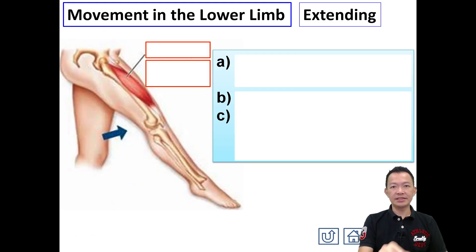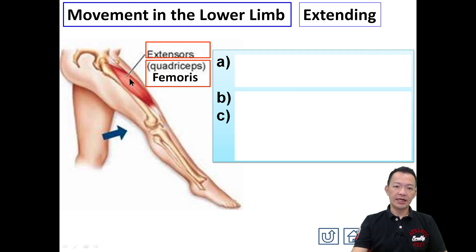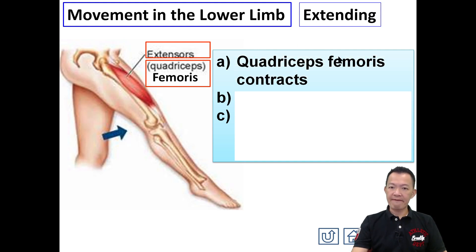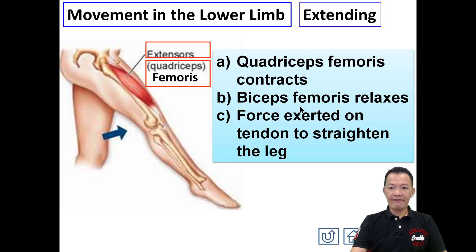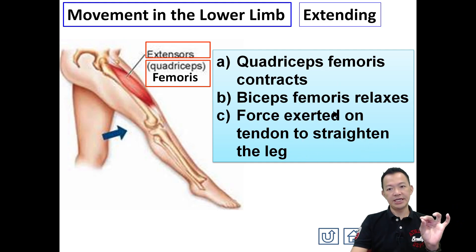Extension — straightening the leg — is done by the quadriceps femoris. So quadriceps femoris contracts and biceps femoris relaxes. Force is exerted on the tendon, and it strengthens the leg, straightening it.